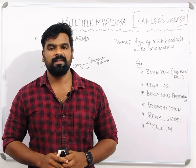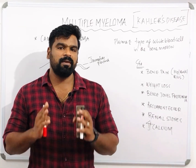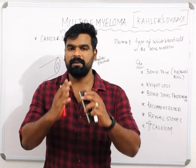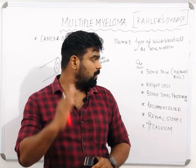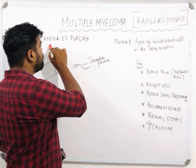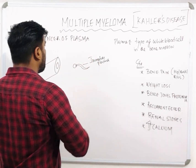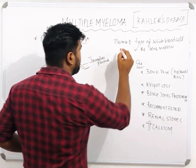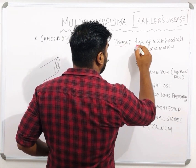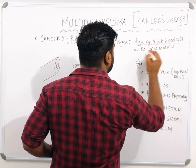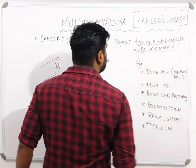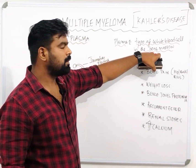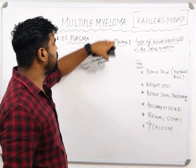Hi all, welcome to Nidin's Aarantrini. Today we are going to discuss multiple myeloma. It is a cancer of plasma cells. Plasma is one type of white blood cell in the bone marrow. It is a cancer of plasma in the bone marrow, and that is called multiple myeloma.